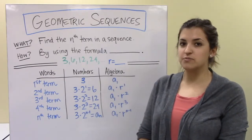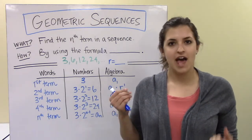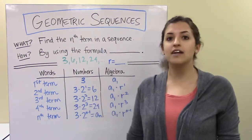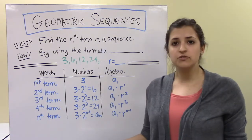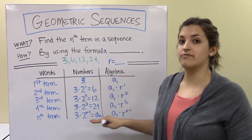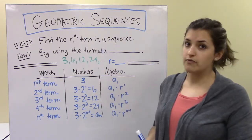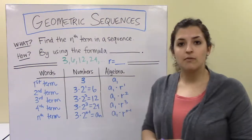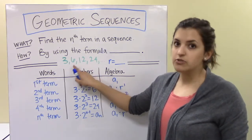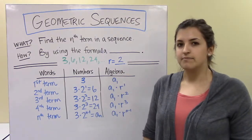Now for objective 2: we want to find the nth term in a sequence. By nth, I mean any term you want — the 10th term, the 15th term, the 200th term. We're going to do this using a formula, but first let's derive it. Consider the sequence 3, 6, 12, 24, and so on. 6 divided by 3 is 2, 12 divided by 6 is 2, and 24 divided by 12 is 2, so r equals 2.